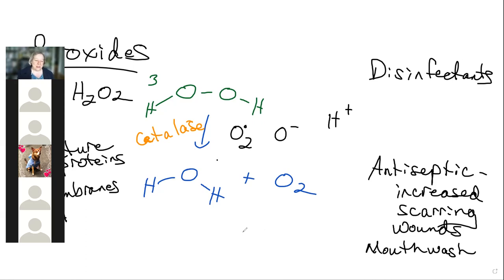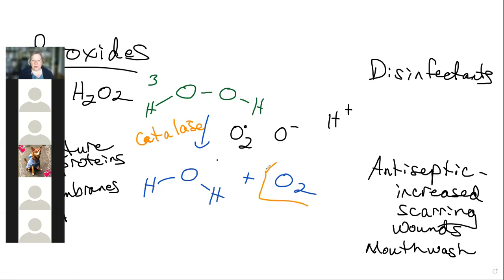Hydrogen peroxide mouthwash helps prevent periodontal disease, and if you have oral sores it helps clear those up quickly. The release of oxygen will kill or inhibit the growth of certain types of microbes — specifically anaerobes.